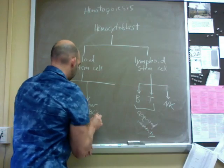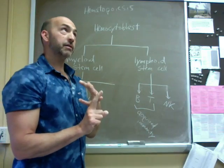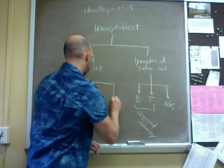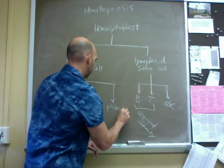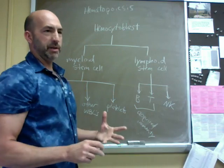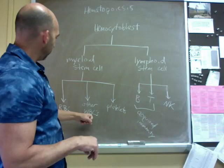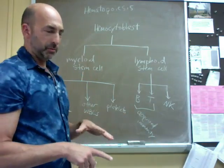Other WBCs would include the neutrophils, the basophils, the eosinophils, the monocytes. They're all in there. And then the last group would be the platelets. Platelets are cell fragments, not full-blown cells. We will have to talk more about the individual white blood cells and what they do when we get to immunity.